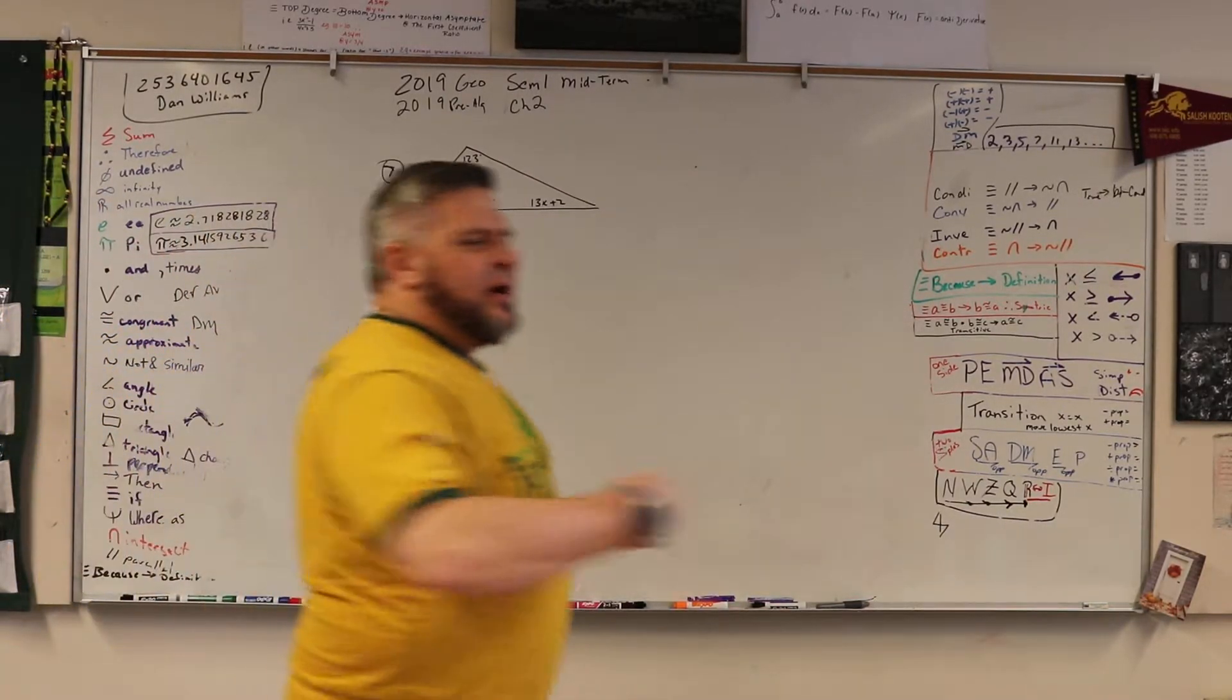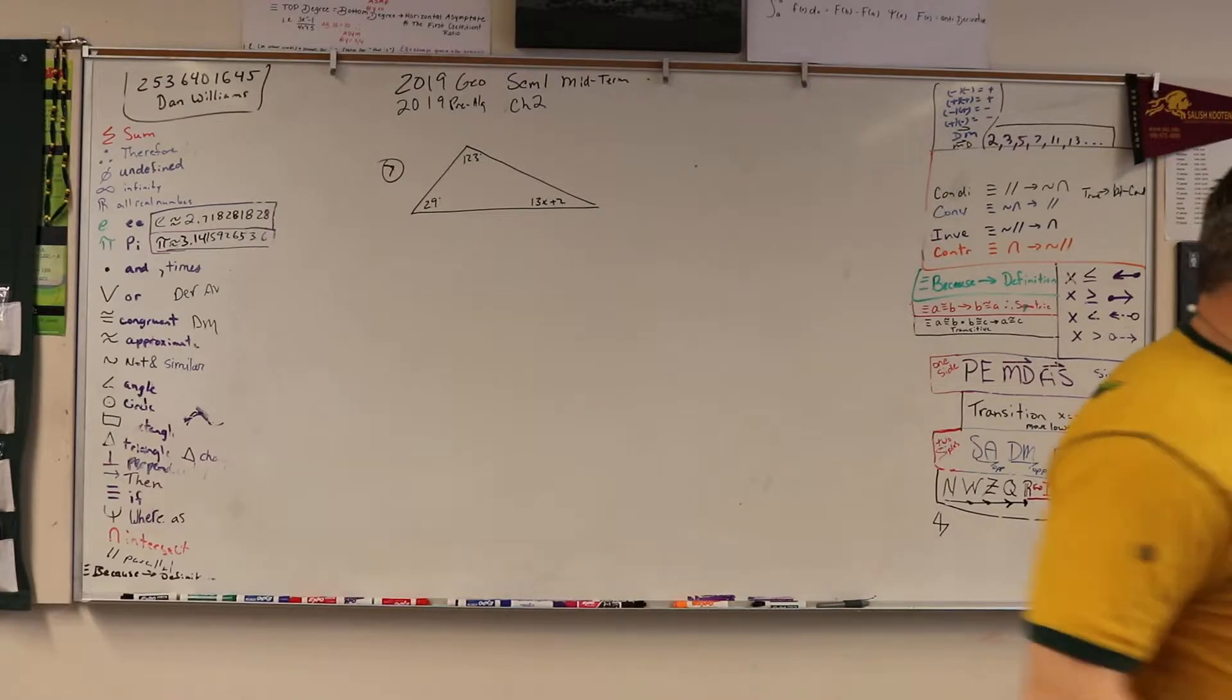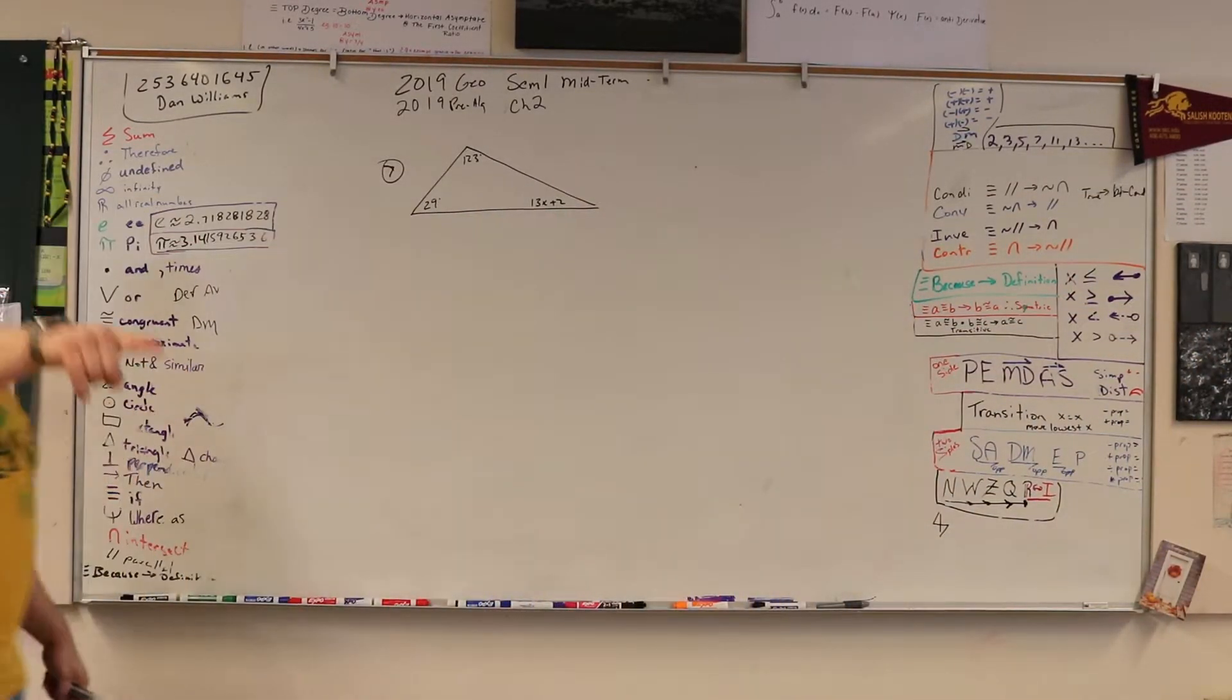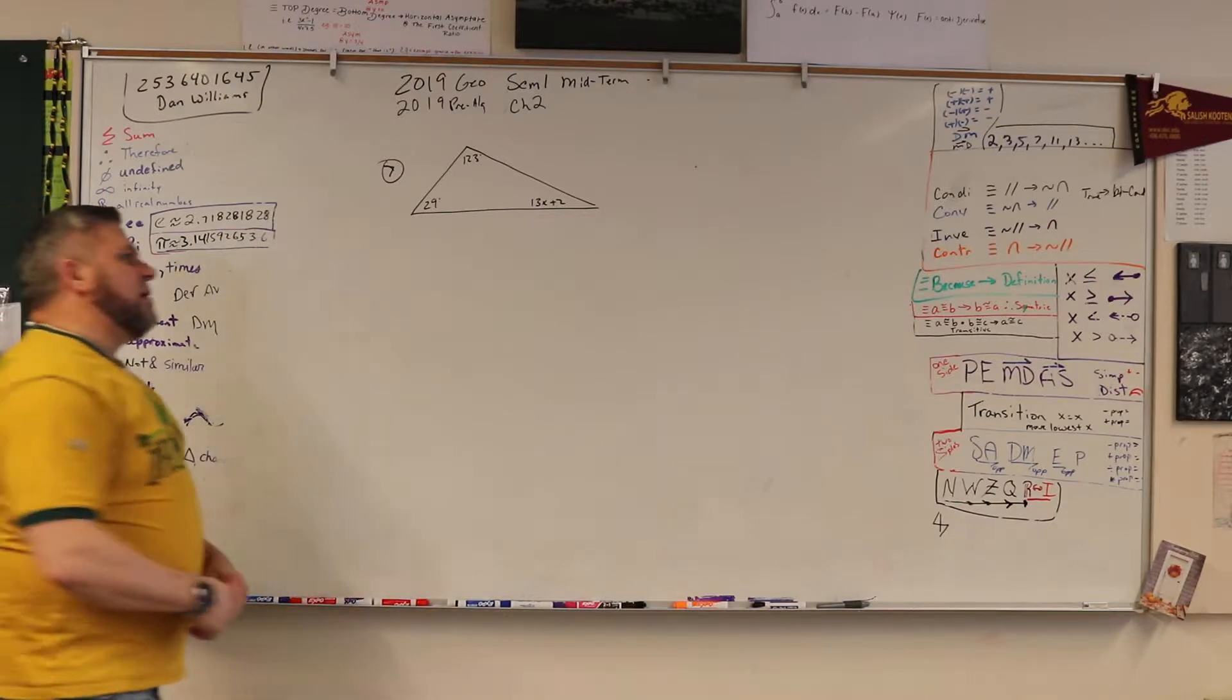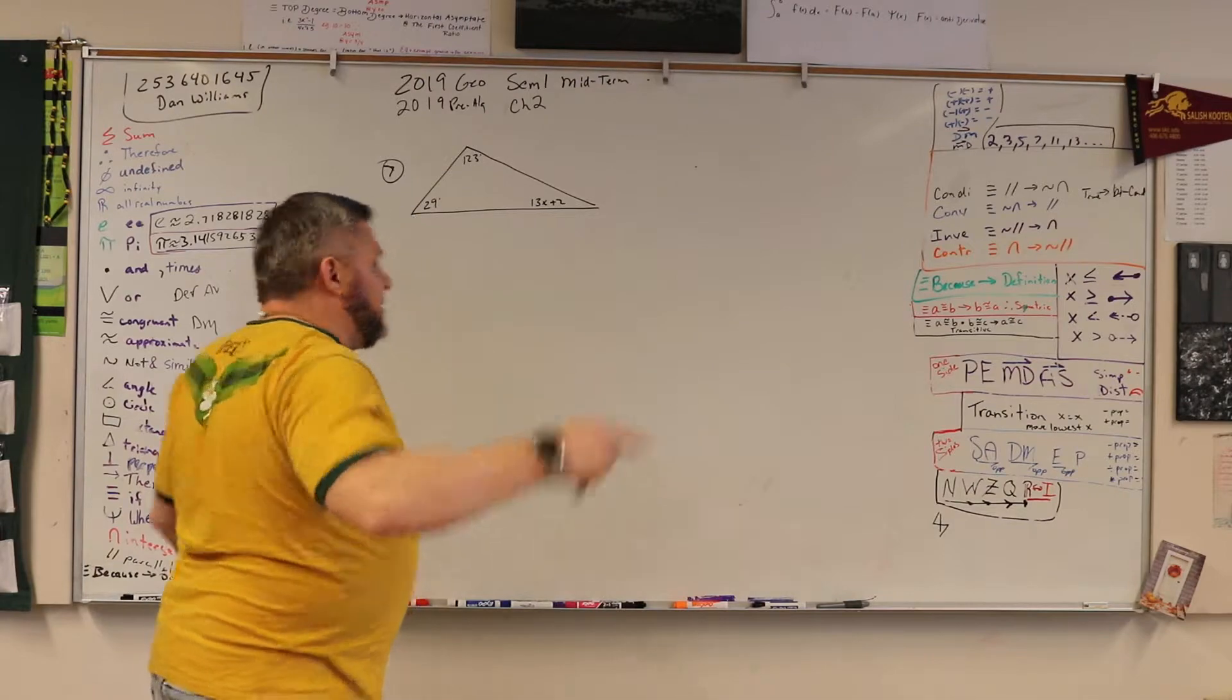What do all the angles in a triangle add up to be? All the angles in a triangle, how much? 180. That's right. There you go. Write it down.